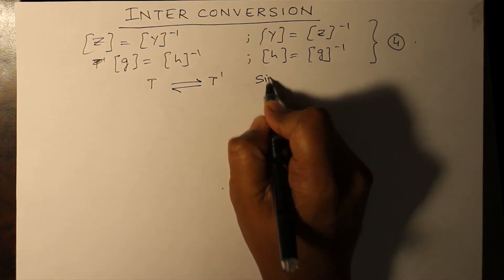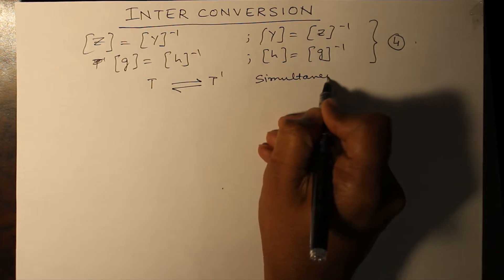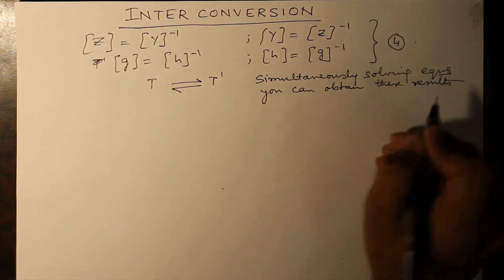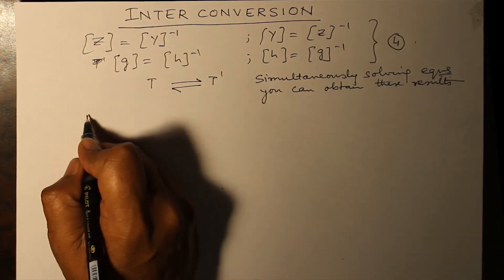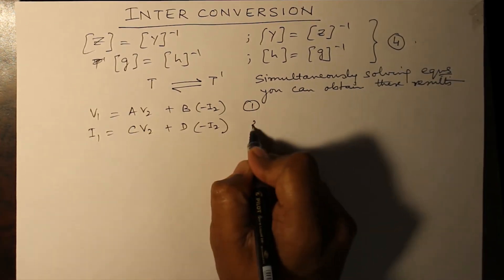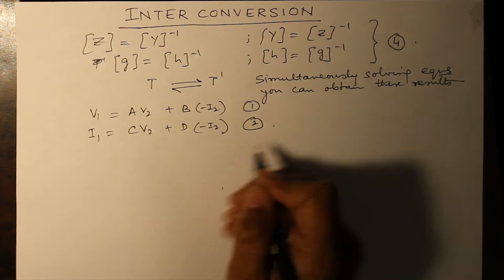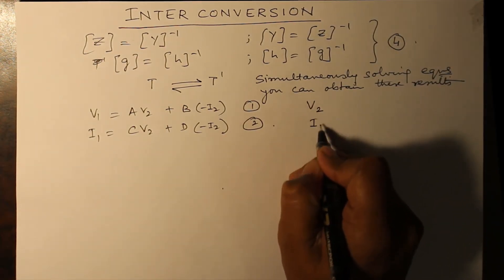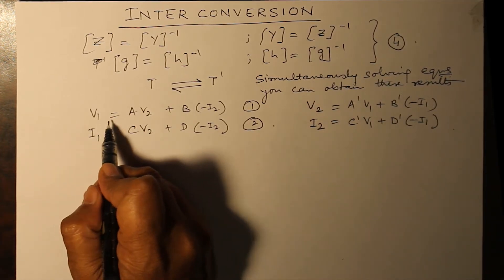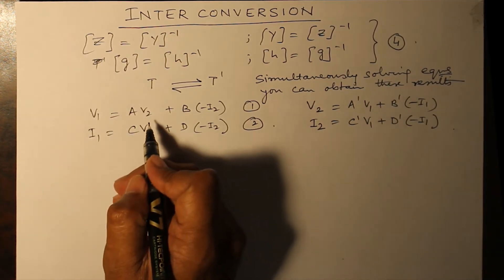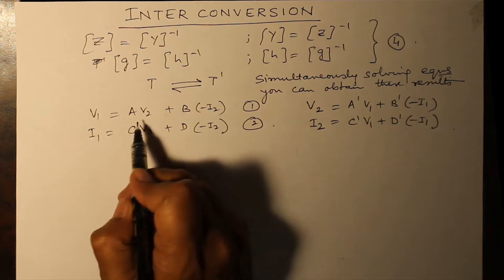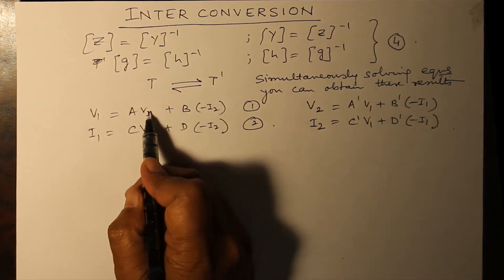Simultaneously solving the equation, I'll give you a hint. This is equation one: V1 and I1. This is equation two. We want V2 and I2. Basically, we want to eliminate: if we want to find out V2, we have to eliminate I2, and when we want to find out I2, we will have to eliminate V2.